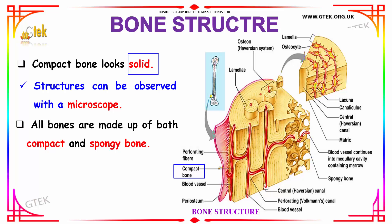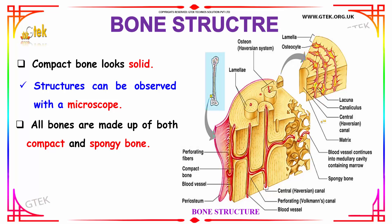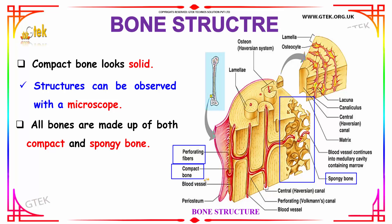If you observe the structure of a bone under a microscope, you can see that it contains a compact portion and a spongy portion. The spongy bones are filled with air spaces. So the bone structure has fibers, compact bone, and the spongy bone with blood vessels running in between.